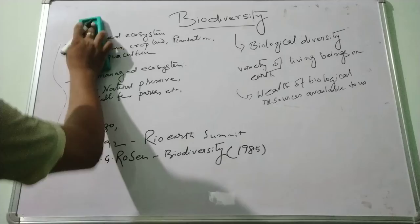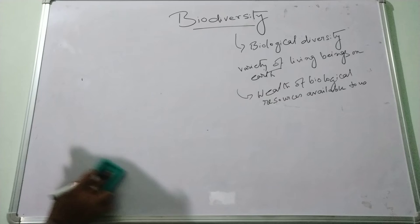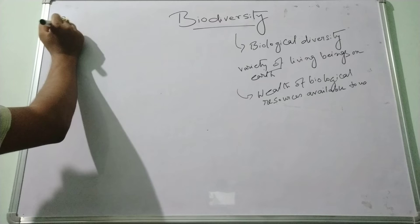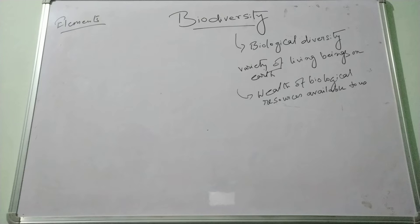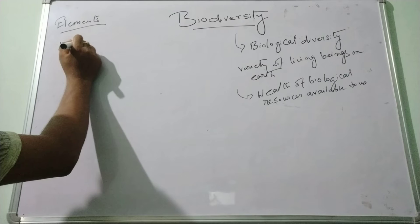Now we discuss what are the elements of biodiversity. Over the last 30 years, many different organizations, scientists, and biological societies have given different types of definitions about biodiversity. In 1992, the Convention on Biological Diversity was opened. There are different elements of biodiversity, such as genetic diversity.